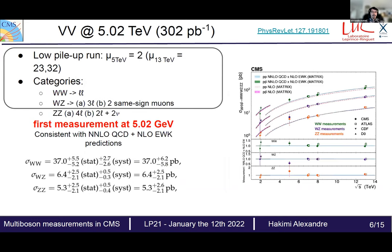The first paper is diboson production at 5.02 TeV — a low pile-up run with approximately two pile-up interactions, as opposed to more than 20 in the usual 13 TeV run. This decay mode has been measured at 7, 8, and 13 TeV by both ATLAS and CMS, but this is the first measurement at this center-of-mass energy. We have different categories depending on decay mode — WW, WZ, or ZZ — and the results are consistent with NNLO QCD and NLO electroweak predictions.